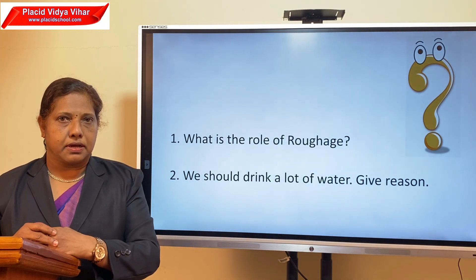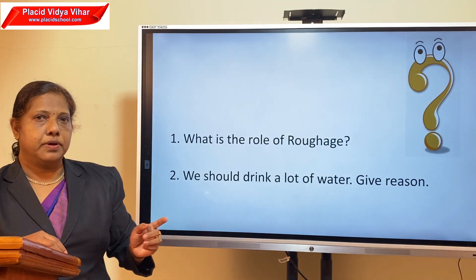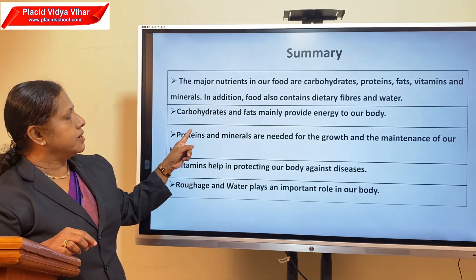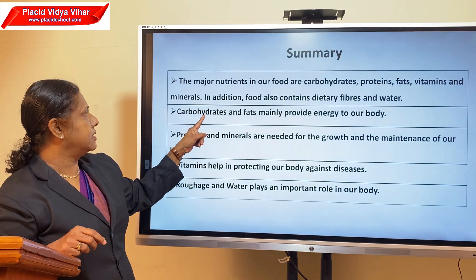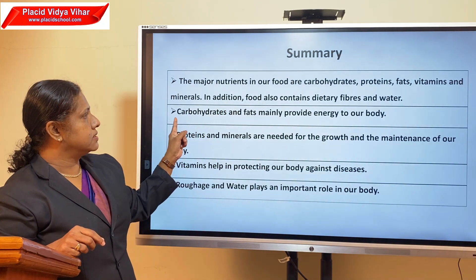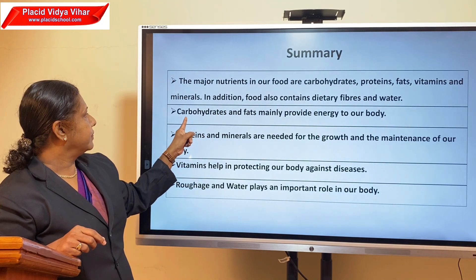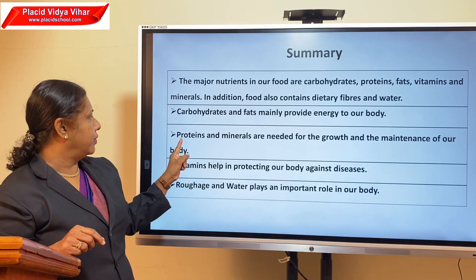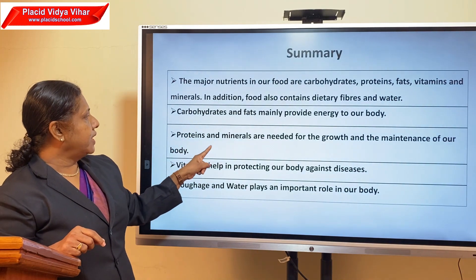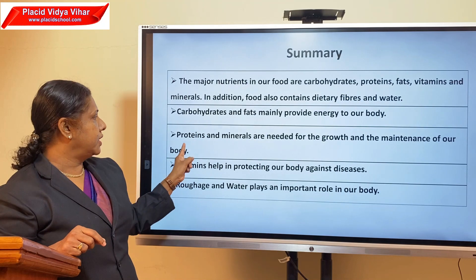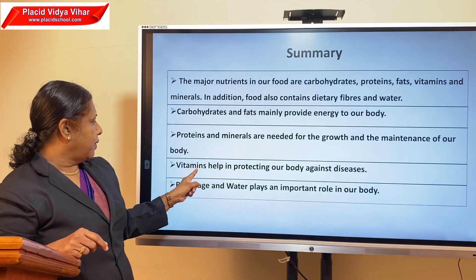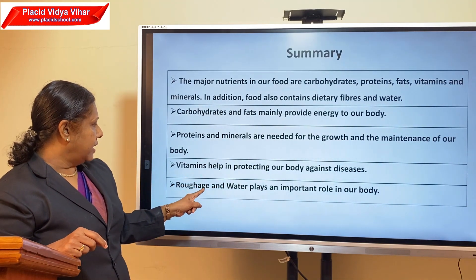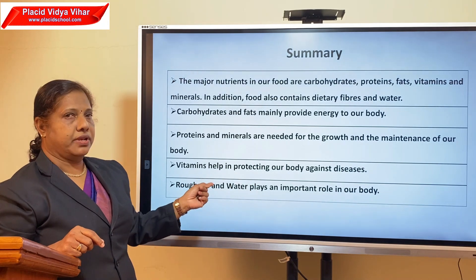Now I am coming to the end of this session. Before winding up, let us summarize the main points. The major nutrients in our food are carbohydrates, proteins, fats, vitamins, and minerals. In addition, food also contains dietary fibers and water. Carbohydrates and fats mainly provide energy to our body. Proteins and minerals are needed for the growth and maintenance of our body. Vitamins help in protecting our body against diseases. Roughage and water play an important role in our body.